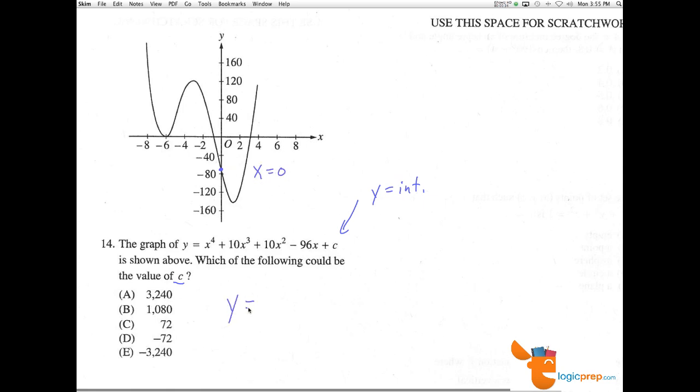And so if I took y equal to 0 to the fourth plus 10 times 0 to the third plus 10 times 0 squared minus 96 times 0 plus c, all of these things will cancel out here, and y equals c. So here's our y-intercept, c.